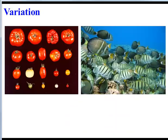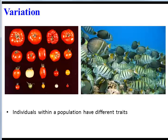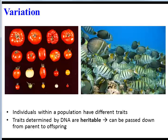Another characteristic of populations is variation — different individuals have different traits. Some of these traits are determined by DNA, and so these traits are said to be heritable. In other words, they can be passed down from parent to offspring, because when a parent reproduces, their DNA gets passed down to the child. So, as we study natural selection, we're really dealing strictly with heritable traits.